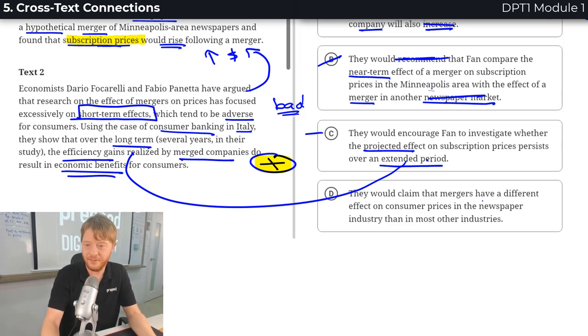And D, they would claim that mergers have a different effect on prices in newspapers than in other industries. We didn't read about other industries. Therefore, what can we do with that choice? We could kill it right now. It has nothing to support it. So it's gone.